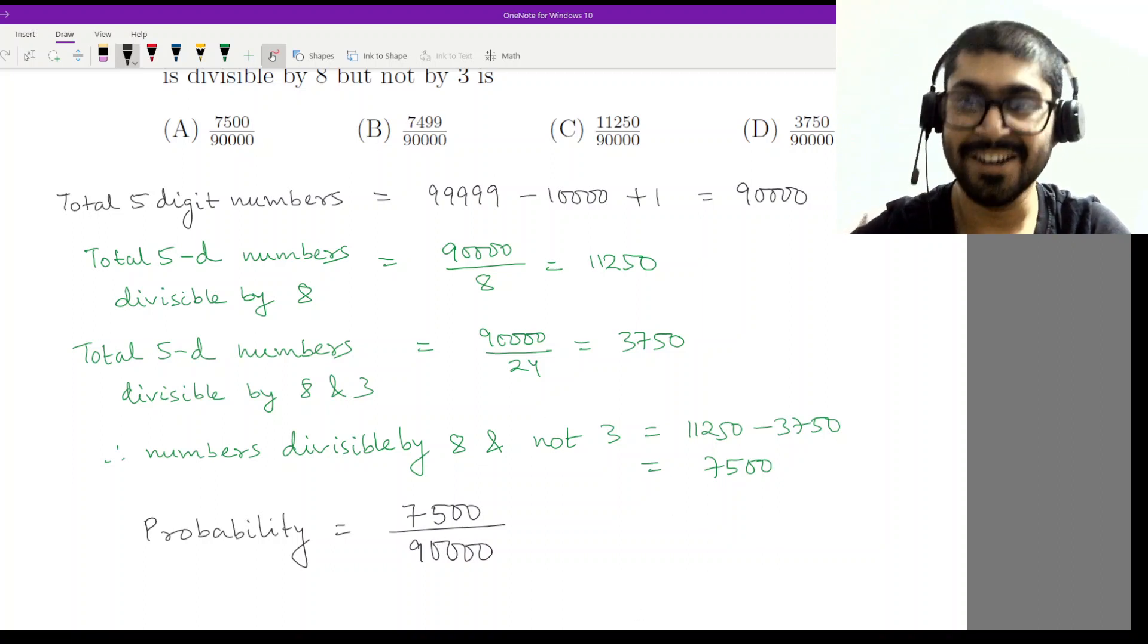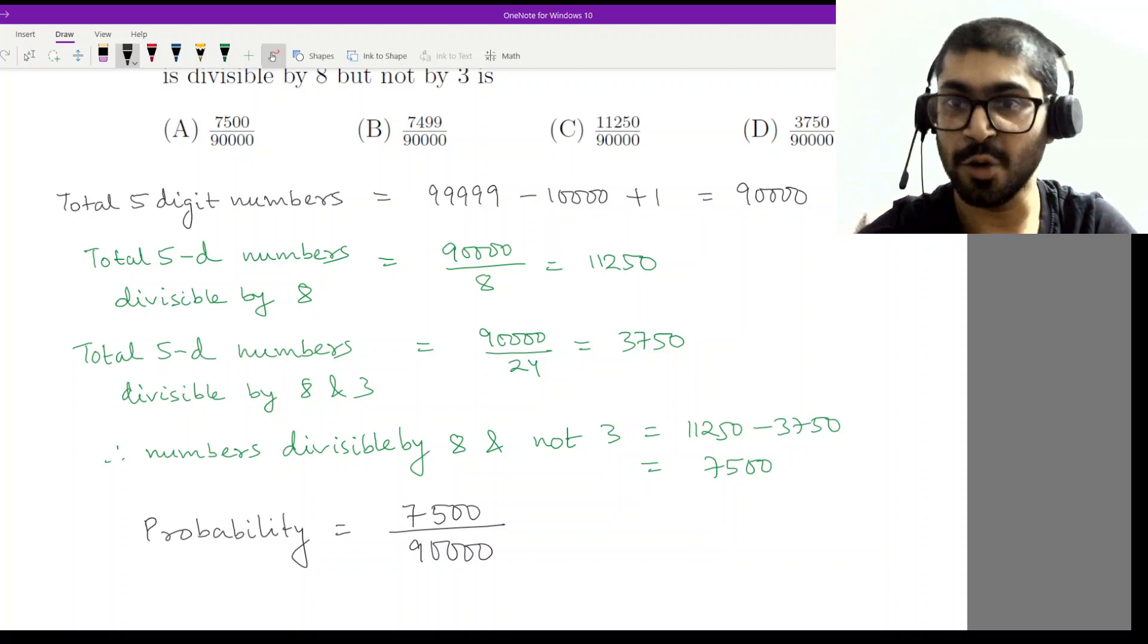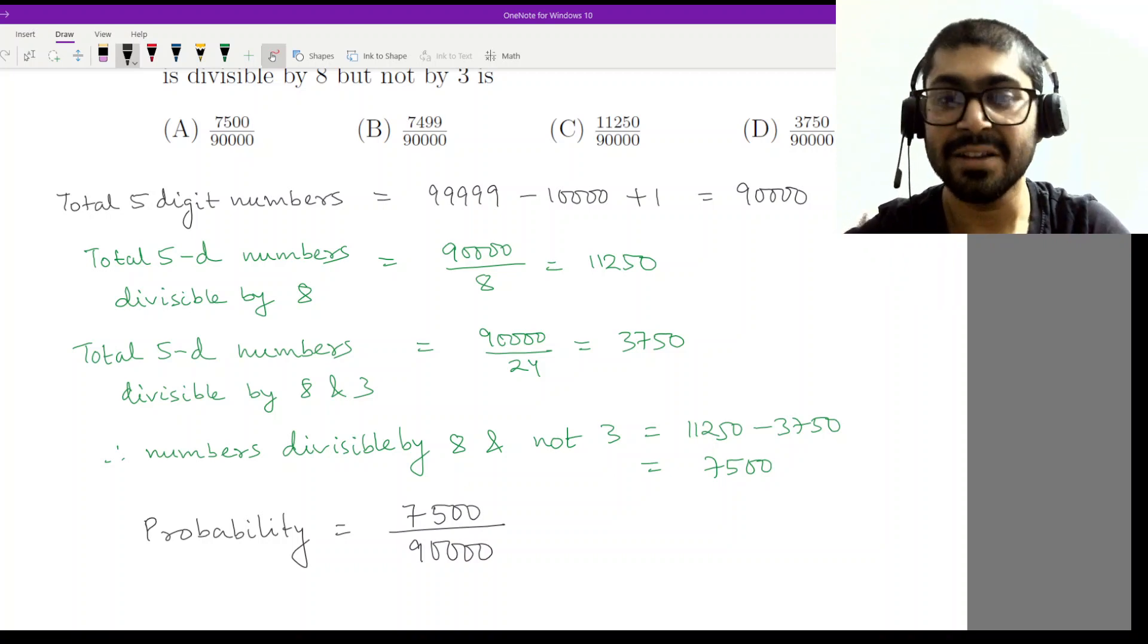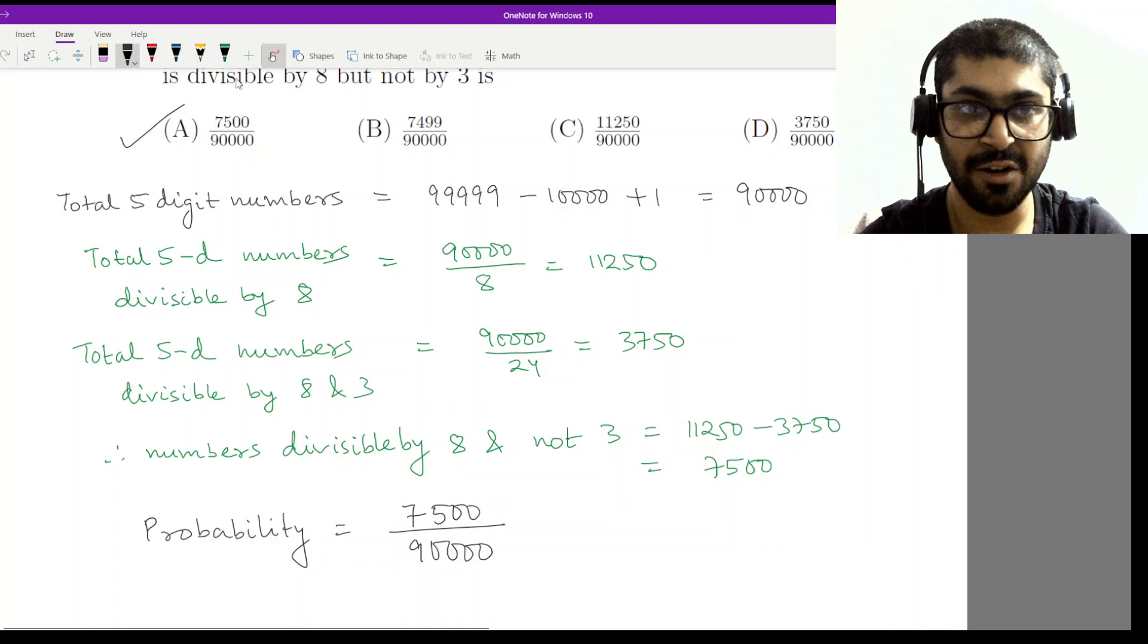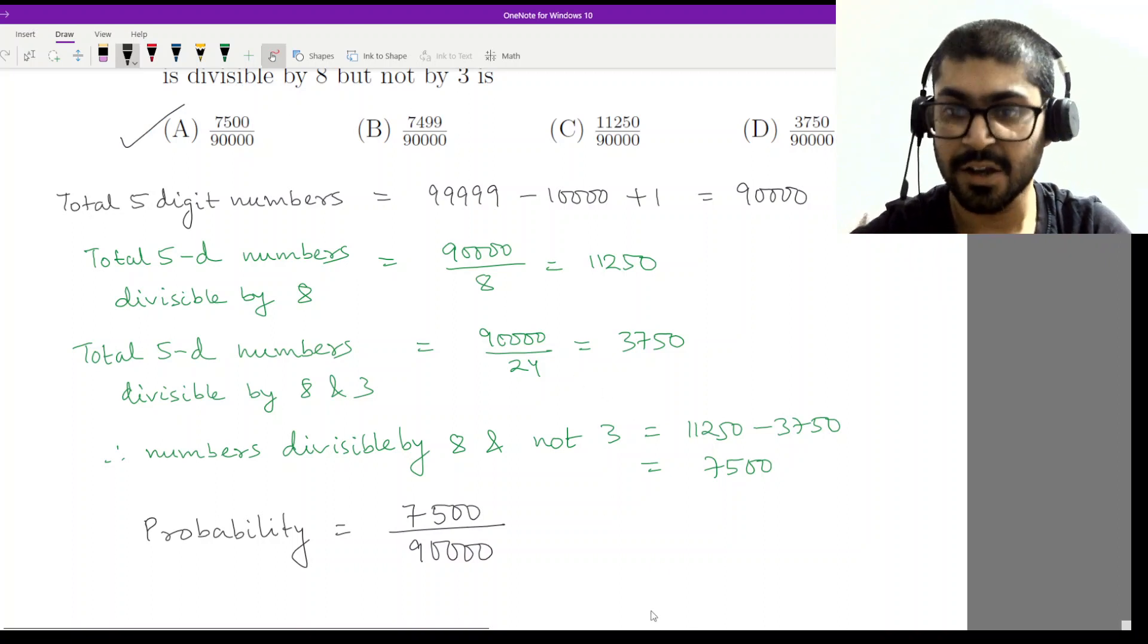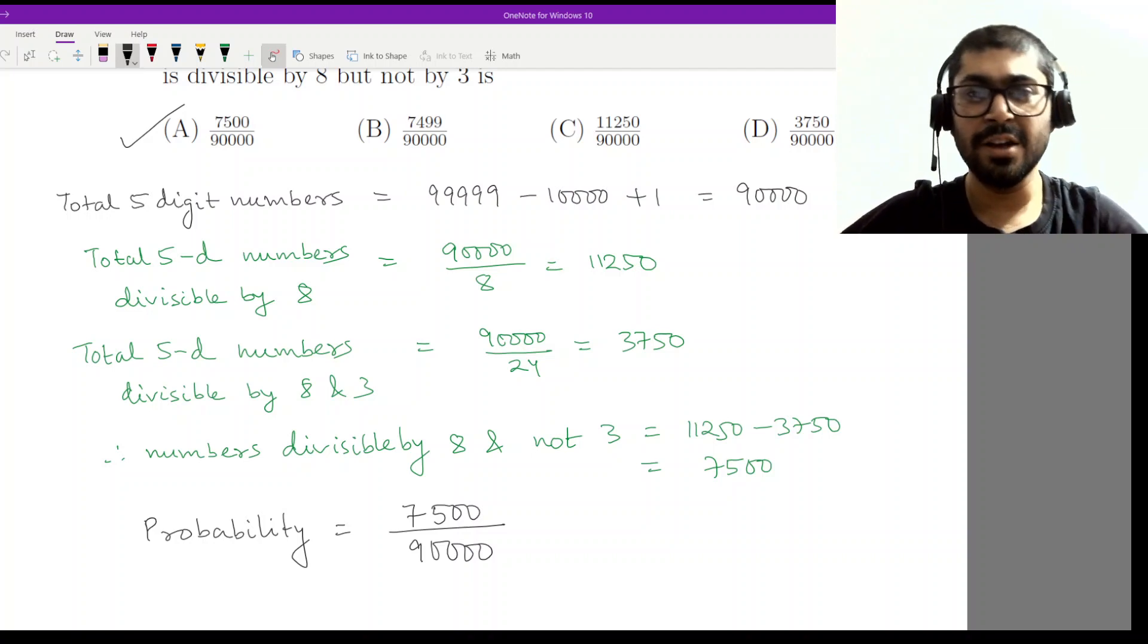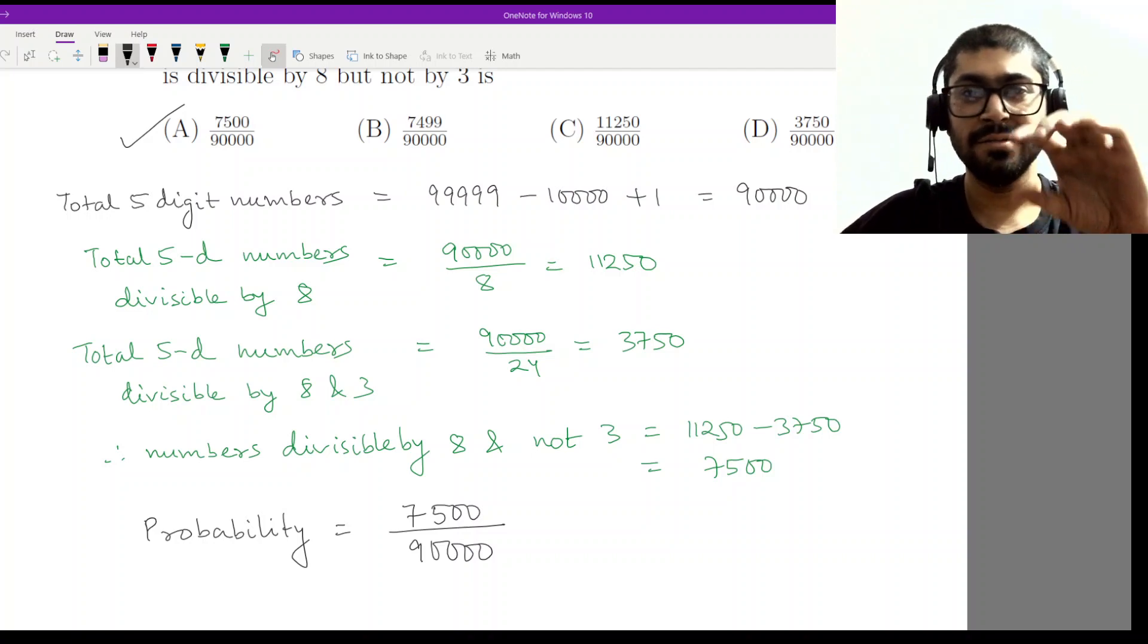Usually in board exams I would ask students to simplify the fraction and make it into lowest terms, but here the options are given in such a way that you can clearly identify what you have done is appearing in option A. I hope this logic was clear. This was an easy problem, you just have to think about it and relate it to the concept of general divisibility and numbers.